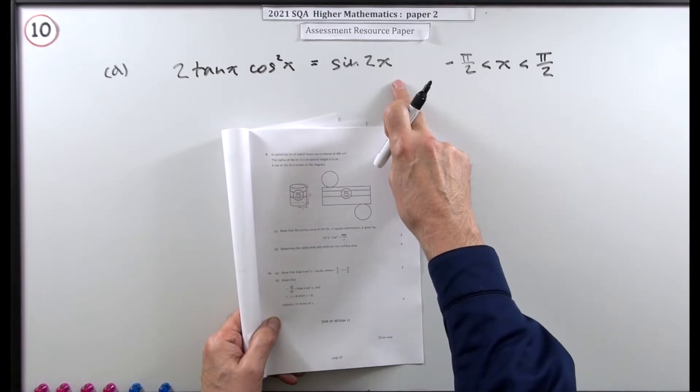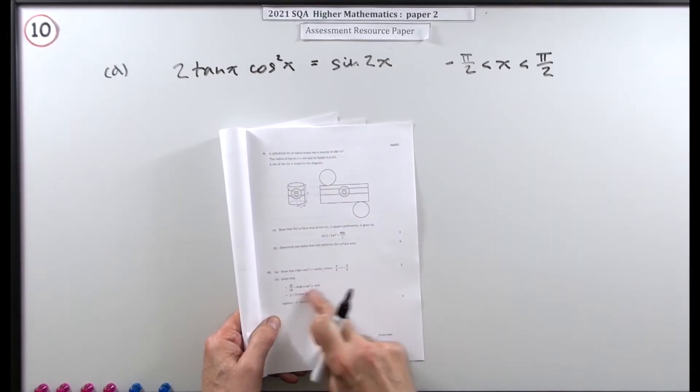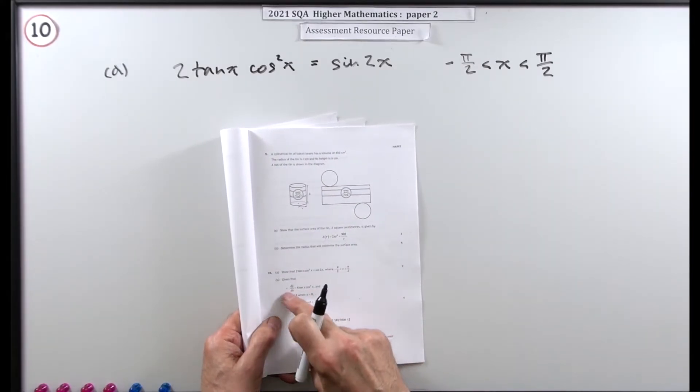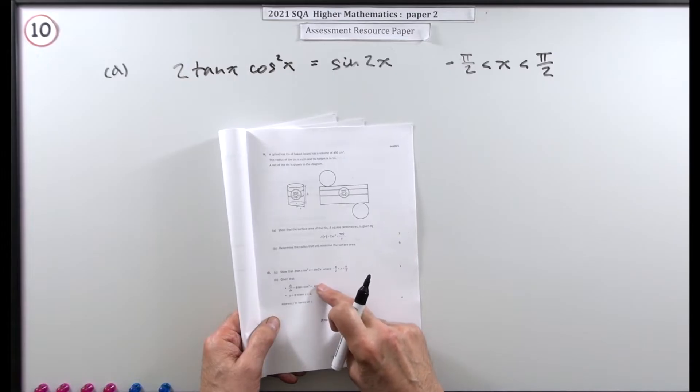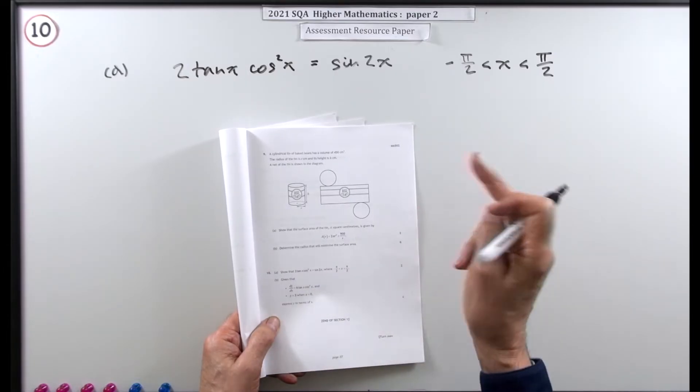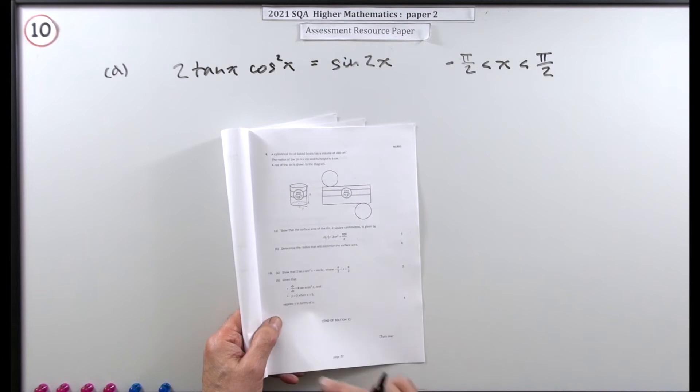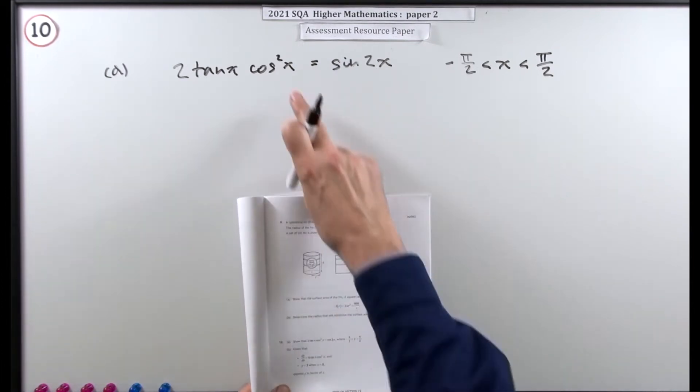It starts off with a trig identity and in the second part you've got one of those ones where you're given the derivative and from the derivative you have to reconstruct the original equation given an extra bit of information. But the first part for two marks is just this.